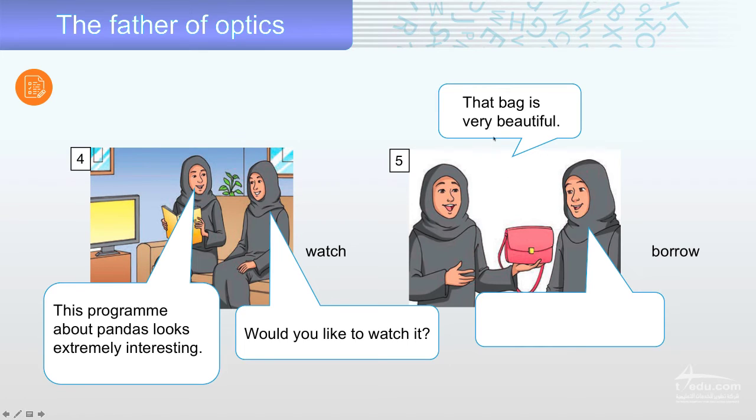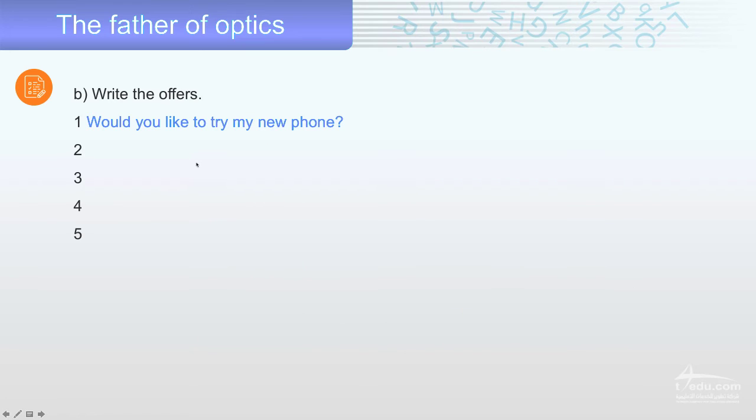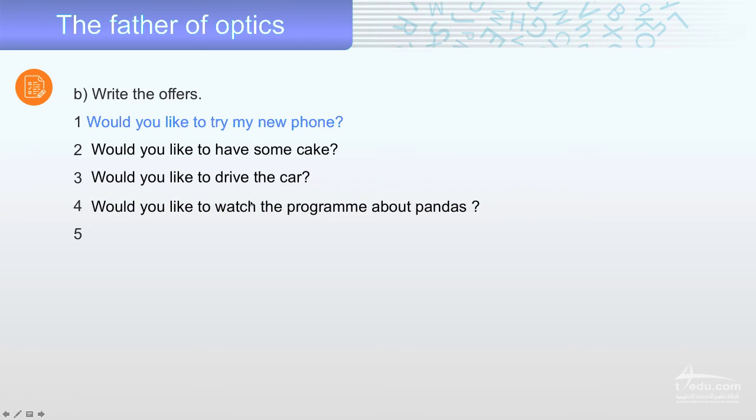Next, that bag is very beautiful. Look at the bag. Very beautiful. Pick an offer. Use borrow. Would you like to borrow it? Now, write the offers. Would you like to drive my new phone? See it again. And come back. Let's see the answers. Would you like to have some cake? Would you like to drive the car? Would you like to watch the program about bandits? Would you like to borrow the bag?